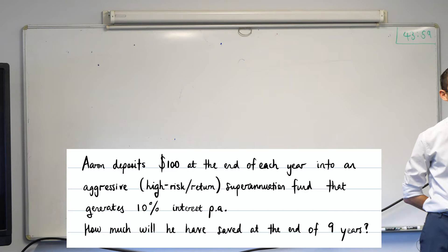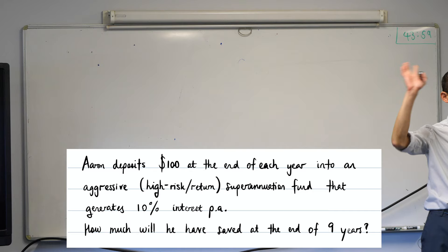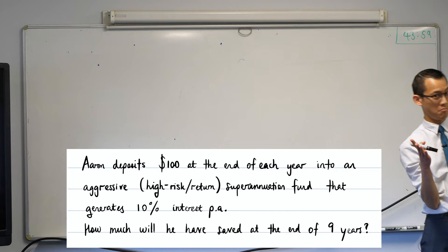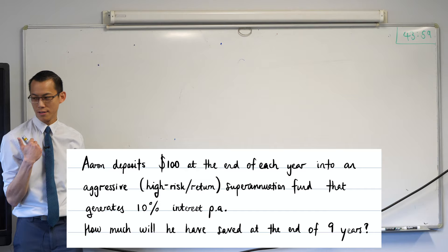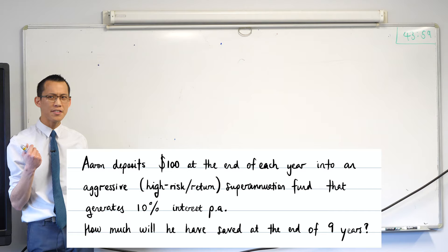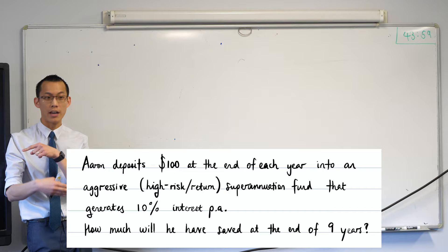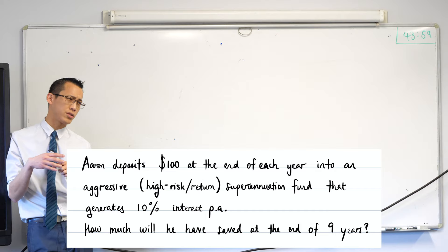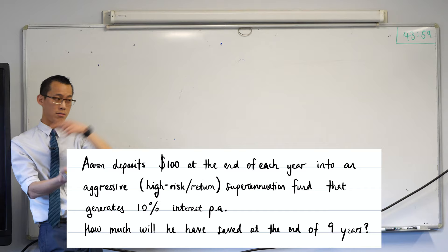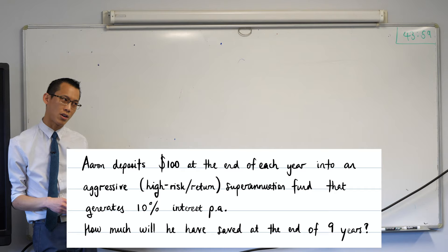There's one word in this question — actually more than one — that tells you this is not just a compound interest situation on its own. You can't just take the interest rate and nine years and off you go. The word 'superannuation' is a big flashing sign. But even before that — 'at the end of each year' — he puts in more money. A deposit happens once, then again and again. The compound interest formula doesn't handle that; it's just a single body of money growing with interest.